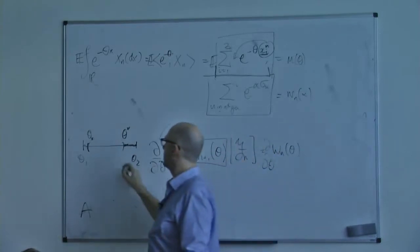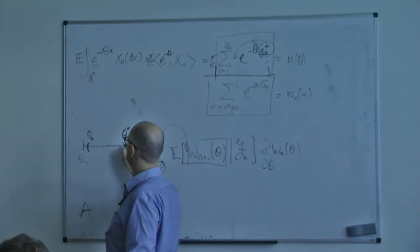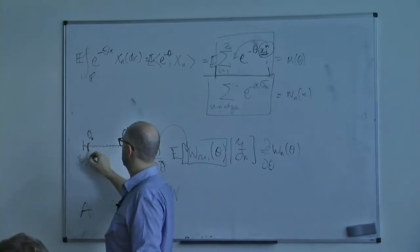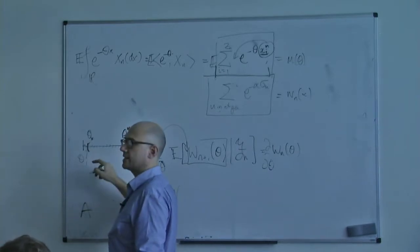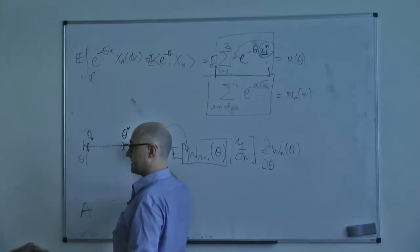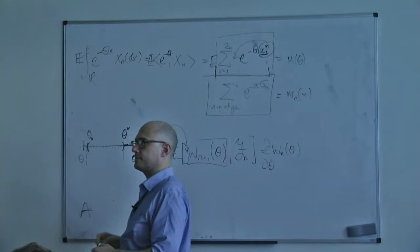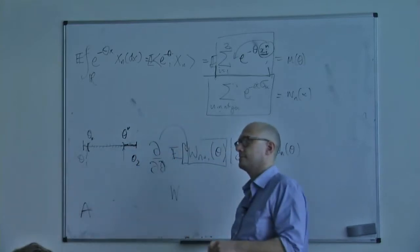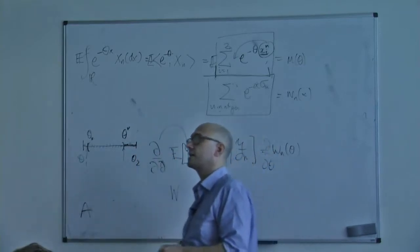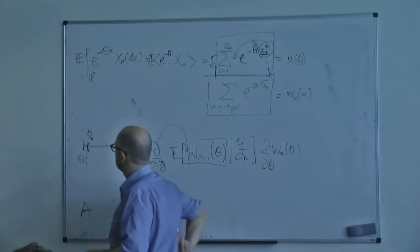The derivative martingale goes to zero inside, but has a good limit precisely on the boundary, and things are not properly resolved here. They could go inside - they could indeed.